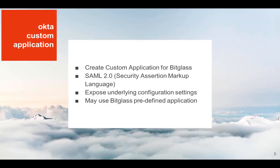Now that we've created the API token, let's move on to defining the settings for Bitglass using the Okta custom application template. Using the custom application template allows us to easily view the configuration settings for future reference. Okta does have a Bitglass application defined in their catalog, and you're free to use that if you so desire.